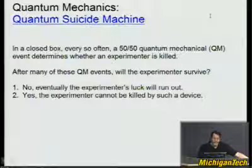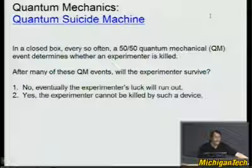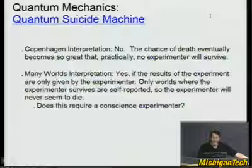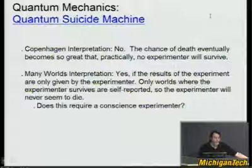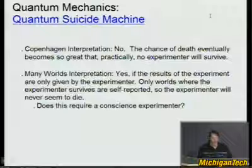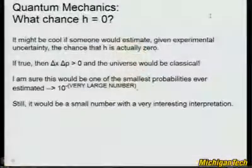Quantum suicide machine — let's say you're in a closed box and a quantum mechanical device could kill you 50% of the time. After many such quantum events, will the experimenter survive? The Copenhagen interpretation would say no — the chance of death will eventually become so great from the accumulation of 50% probabilities that you'll die. The many-worlds interpretation says that if you're the experimenter, you're only reporting on this if you're alive — so you might have almost died 50 times, but since you're here today, they've all come out positive. So many-worlds says yes, you survive. This doesn't give a testable result that can really tell us which is the real interpretation of quantum mechanics. Does this require a conscious experimenter? That's still debated. And with that, please keep Schrödinger away from your cat.